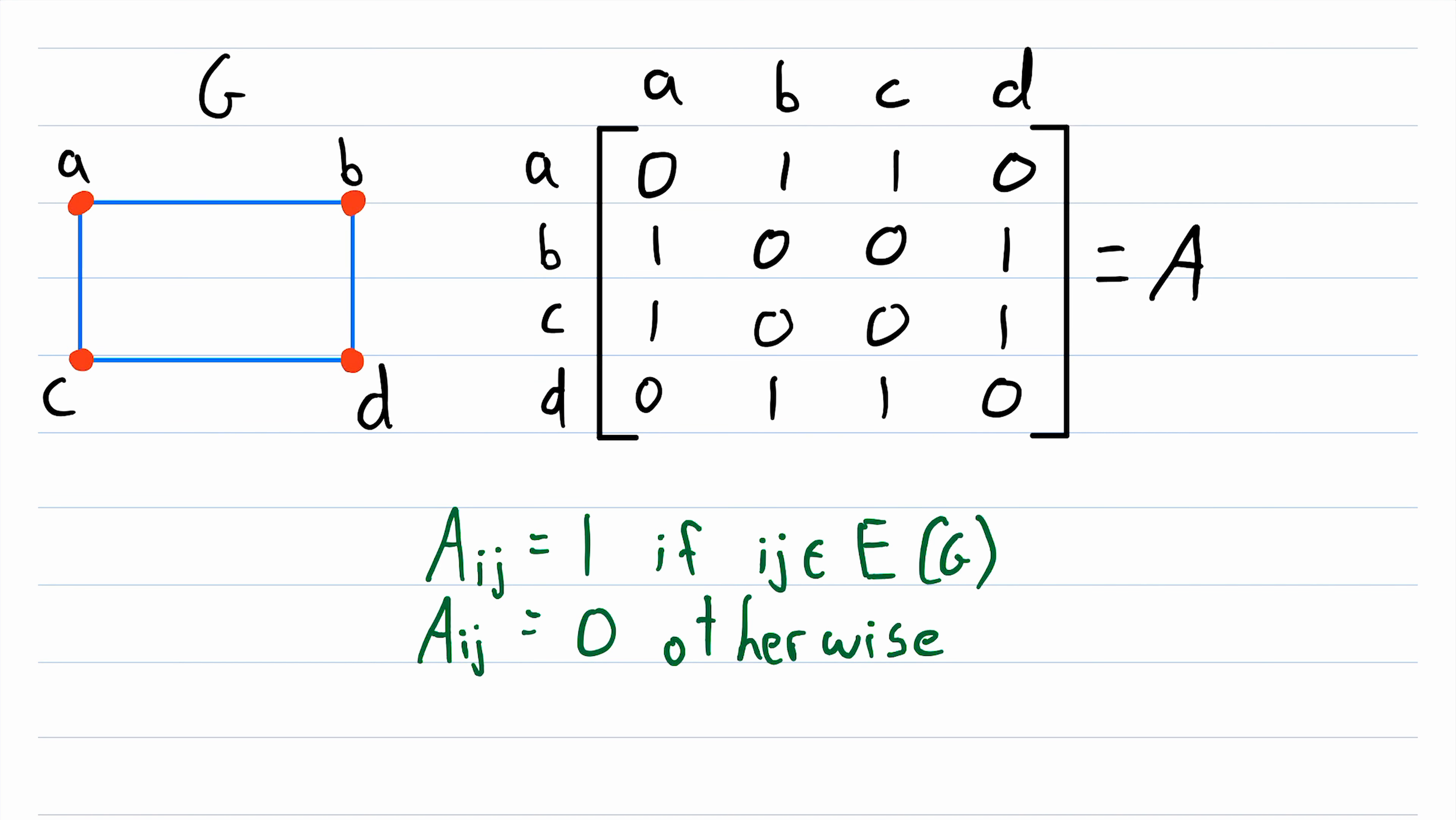A couple neat things to notice here. If you add up all the entries in a row, you'll get the degree of the vertex that row represents. Same thing with the columns. If you add up all the entries in a column, you'll get the degree of that vertex represented by the column. Adding up the entries in this first row gives us 0 plus 1 plus 1 plus 0, which is 2, and of course the degree of the vertex A is 2.